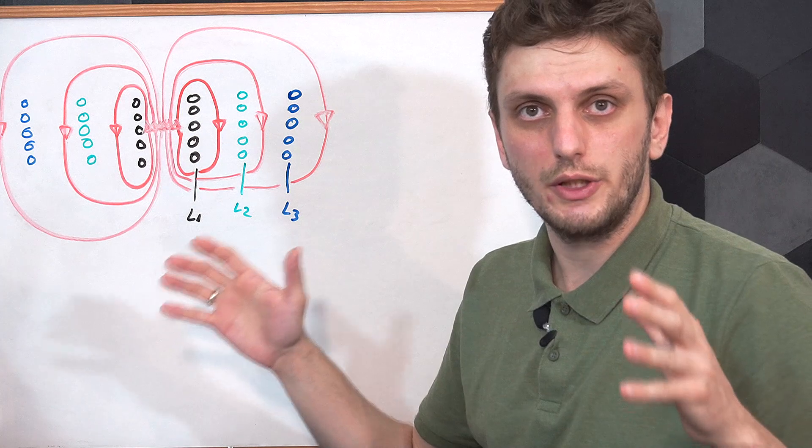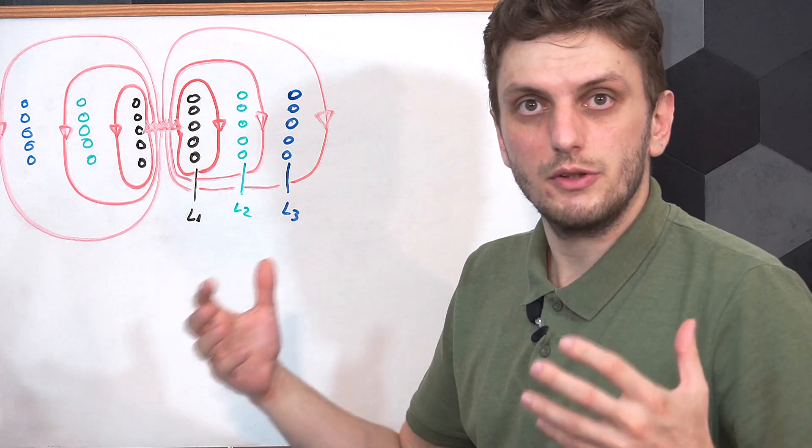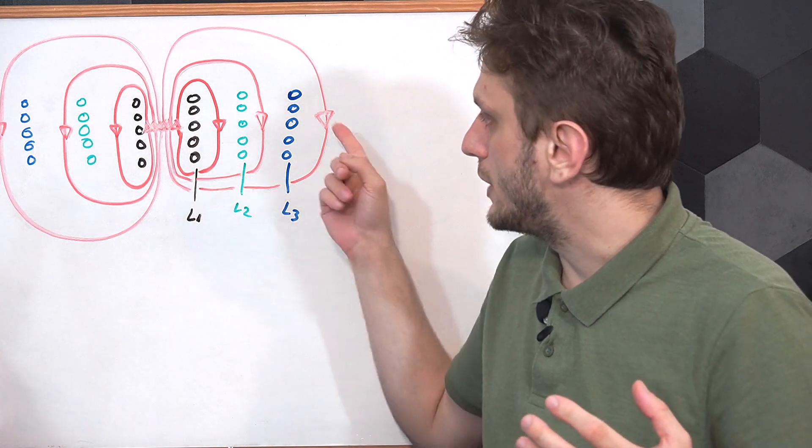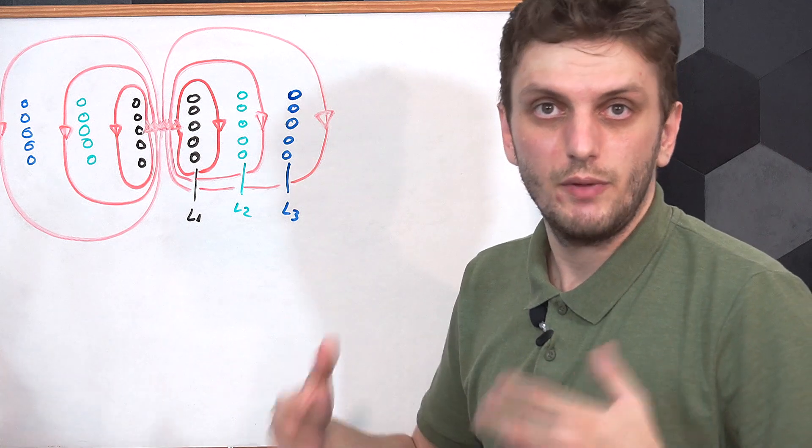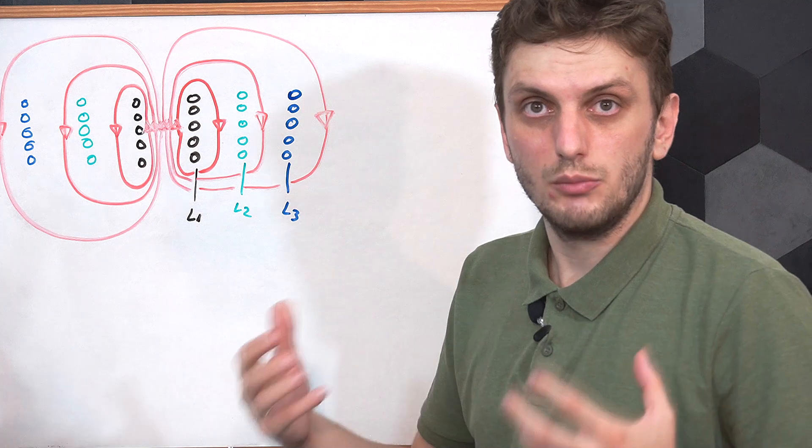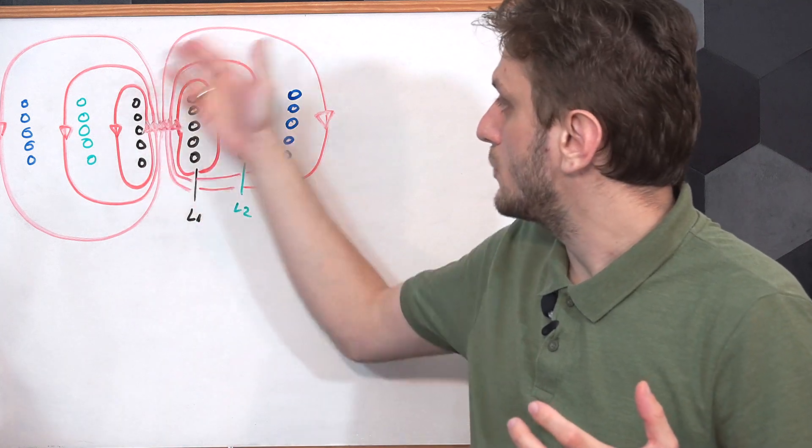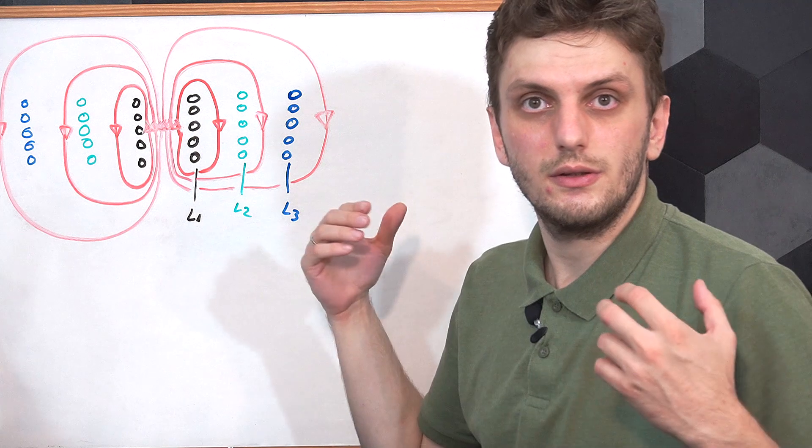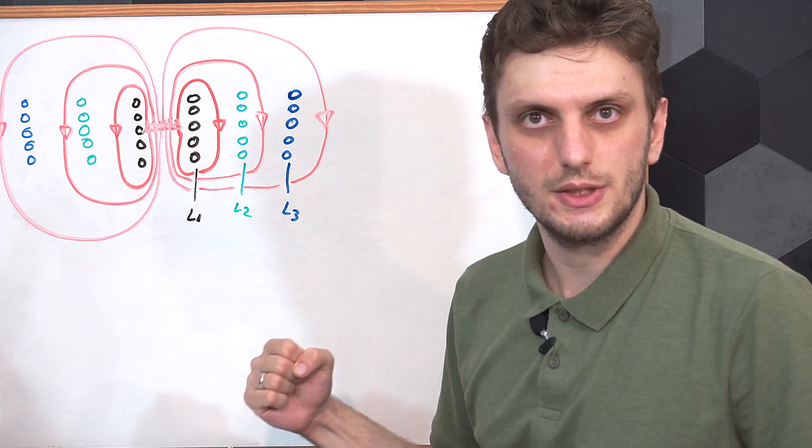So as we move further away from our inner inductor, the amount of magnetic flux that couples between the primary and the secondary reduces. So our inductor coupling reduces, and more of the initial flux leaks without generating a useful current in our secondary side.